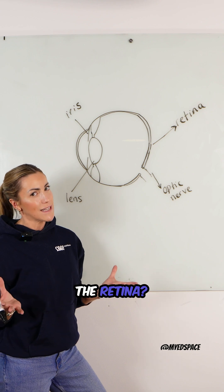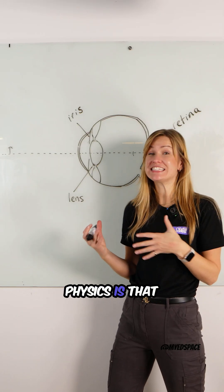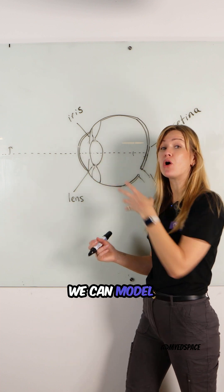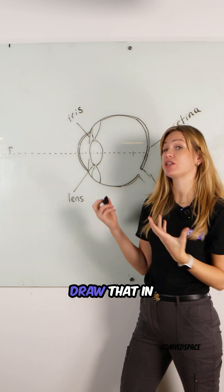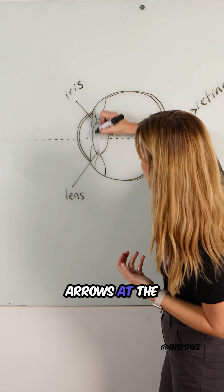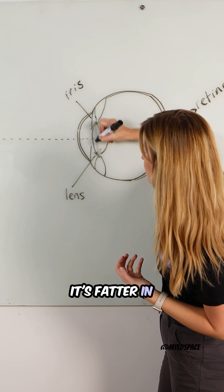But how does the light hit the retina? The physics is that the lens in your eye, we can model as a convex lens. How we draw that in physics is just a straight line with two arrows at the end showing that it's fatter in the middle.